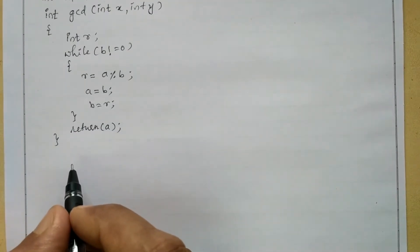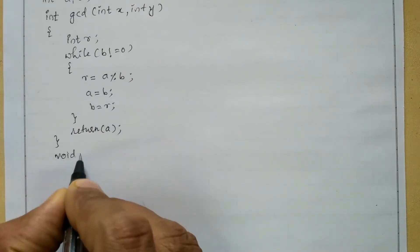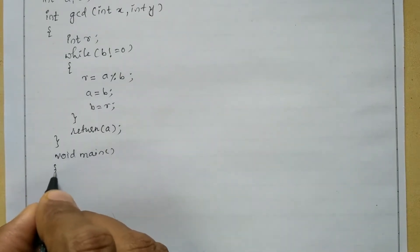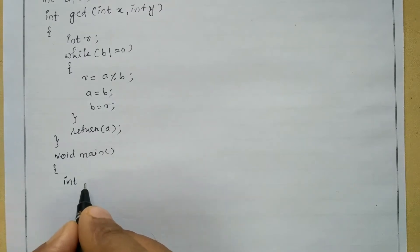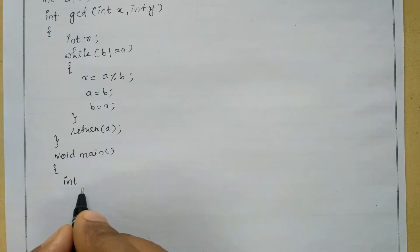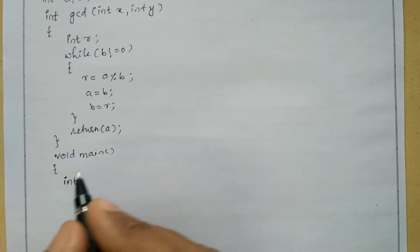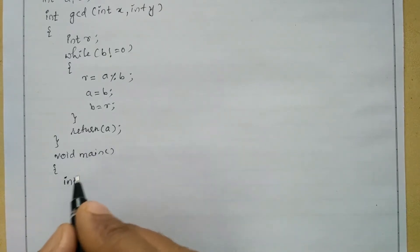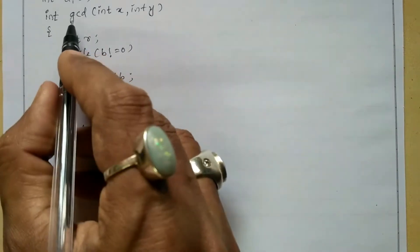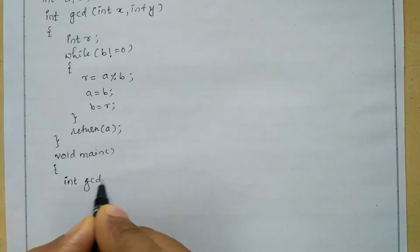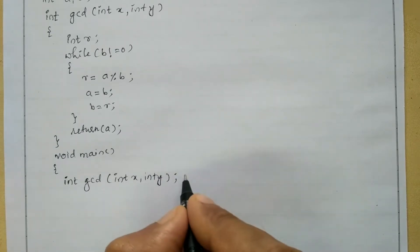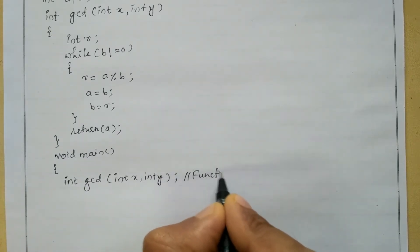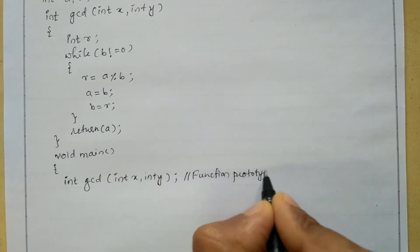Now let us write the main function with void main and curly open brace. Here I'm going to write the function prototype. A function prototype tells the compiler that this particular function definition is present and it should search for it and execute the statements in it. I'll write the return type integer, then gcd with parameters int x, int y, followed by a semicolon — this is called the function prototype.